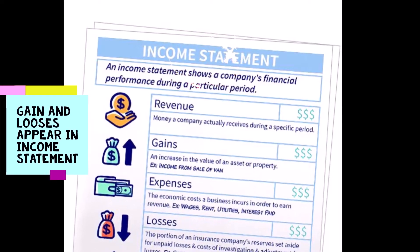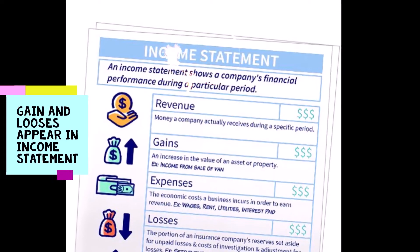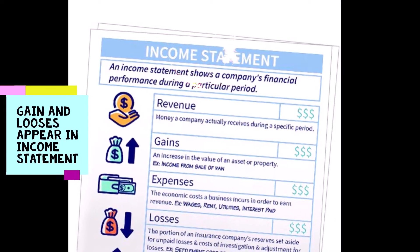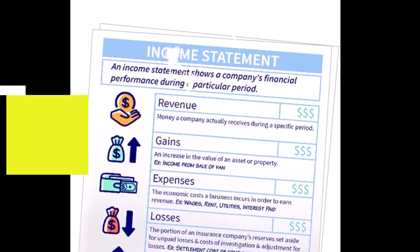Income Statement: gains and losses appear in the Income Statement. Liabilities: economic obligations that a business owes to other businesses or individuals.